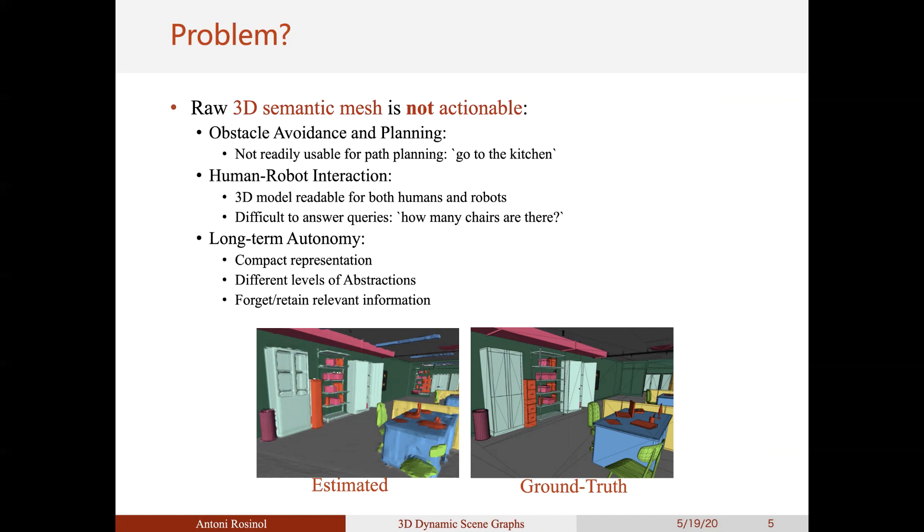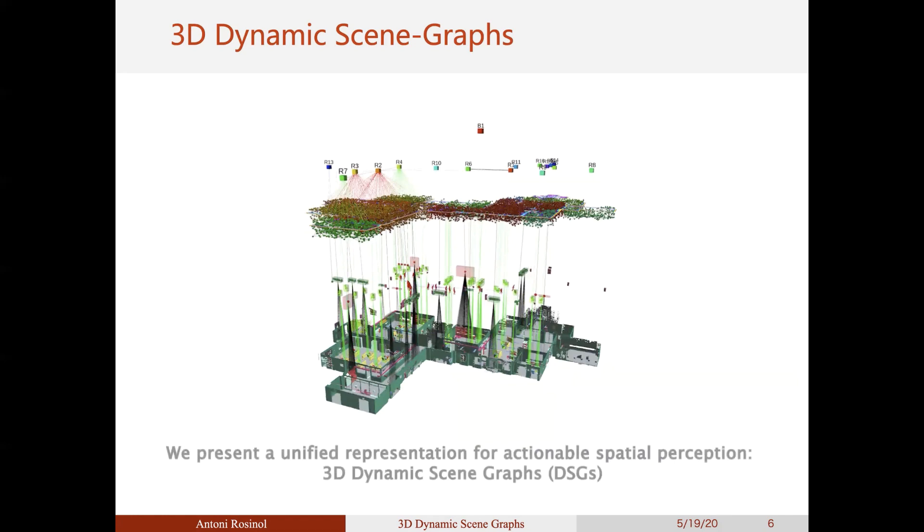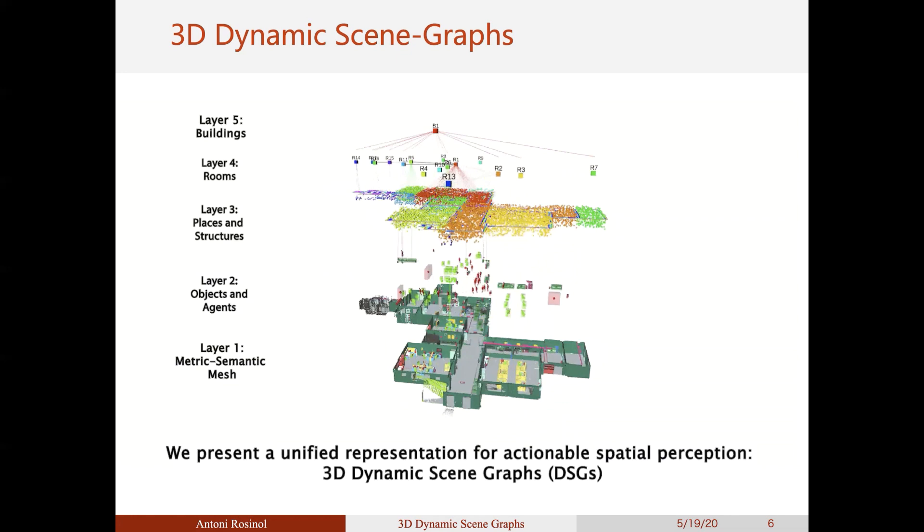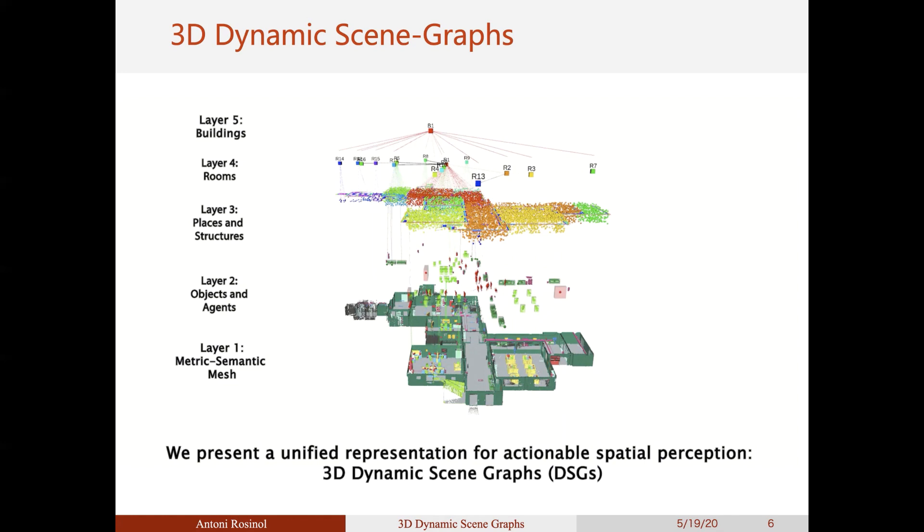So what is a 3D dynamic scene graph, or DSGs? It is basically a unified representation for actionable spatial perception. A DSG is a tree-like representation that abstracts a dense 3D model, such as a metric semantic mesh, into higher level spatial concepts, for example, objects and agents in layer 2, places and structures in layer 3, rooms as in layer 4, or even buildings in layer 5.